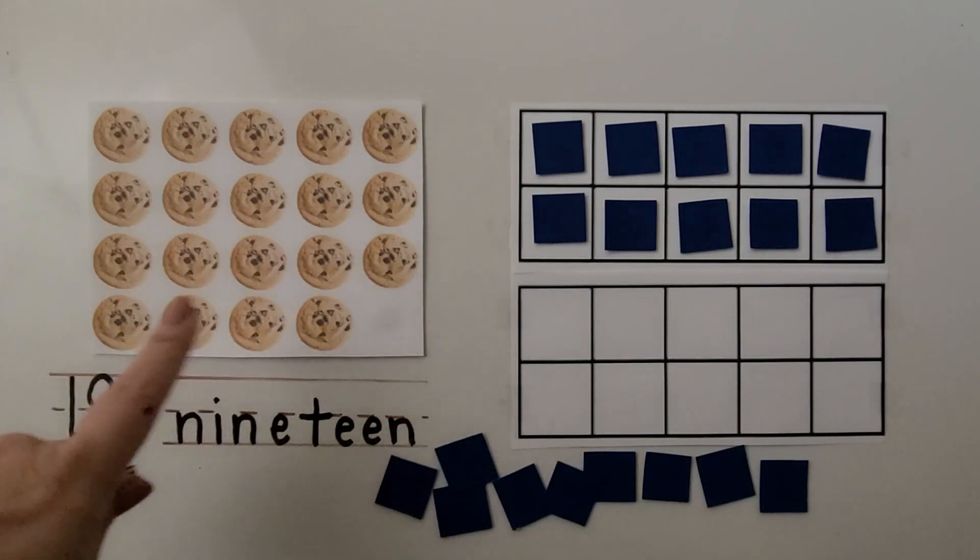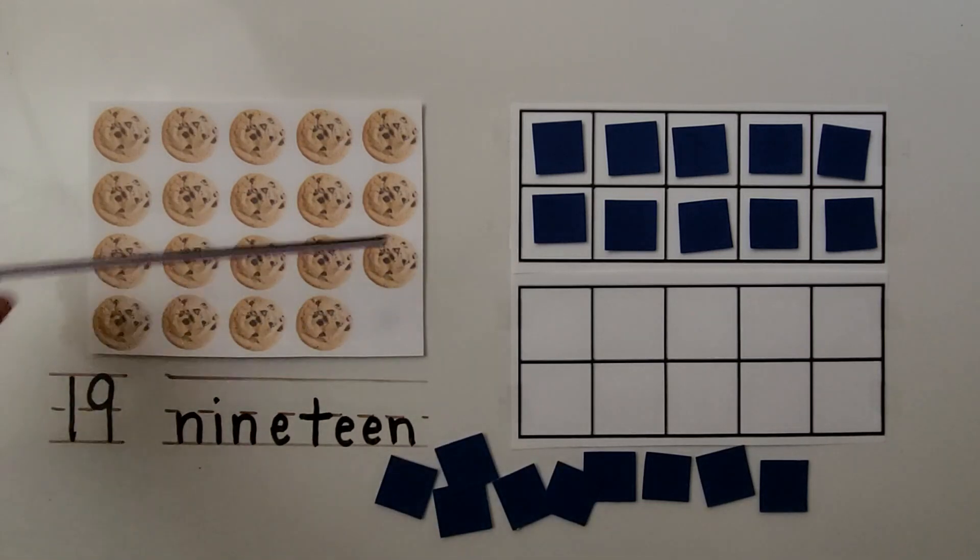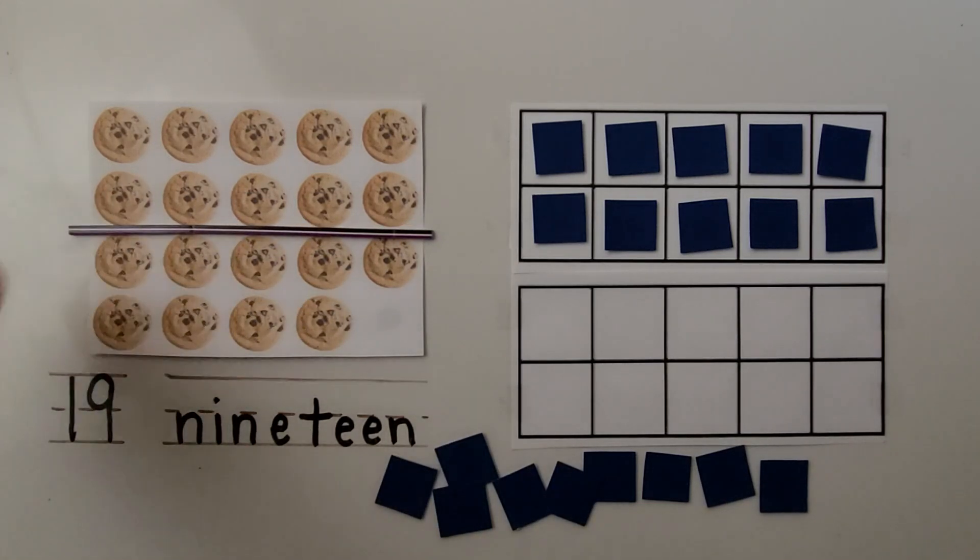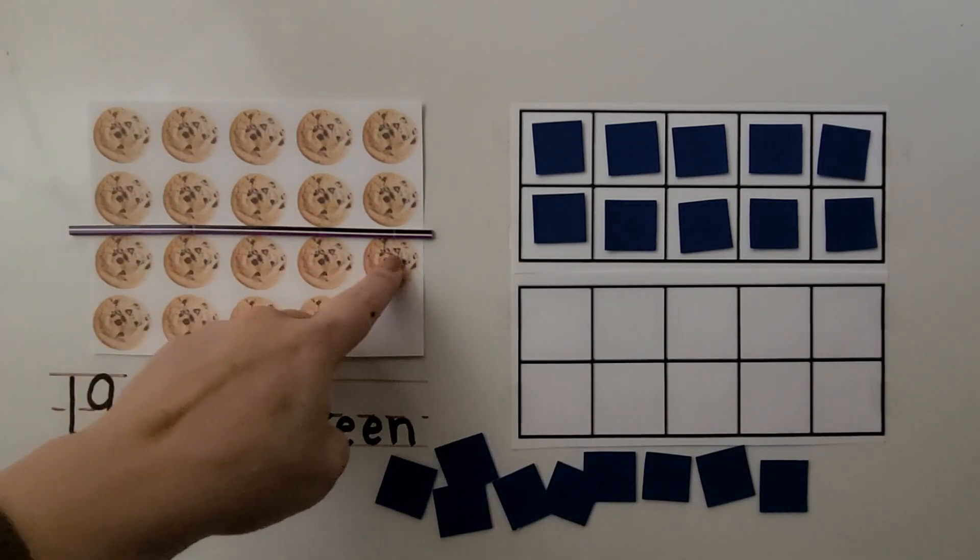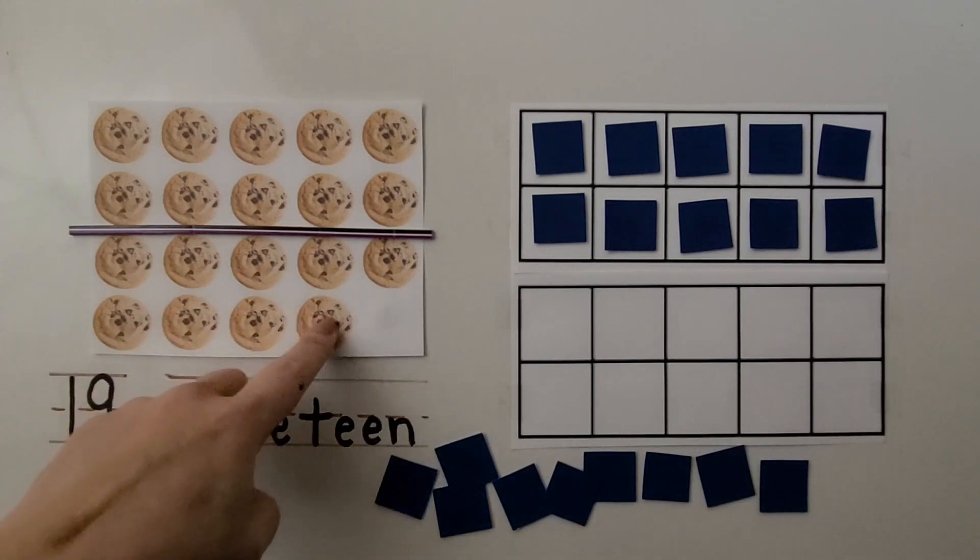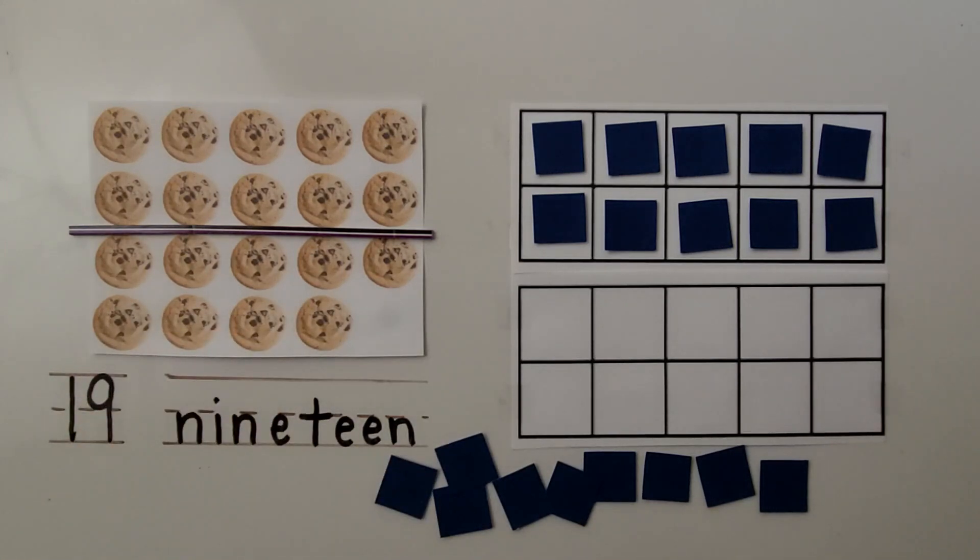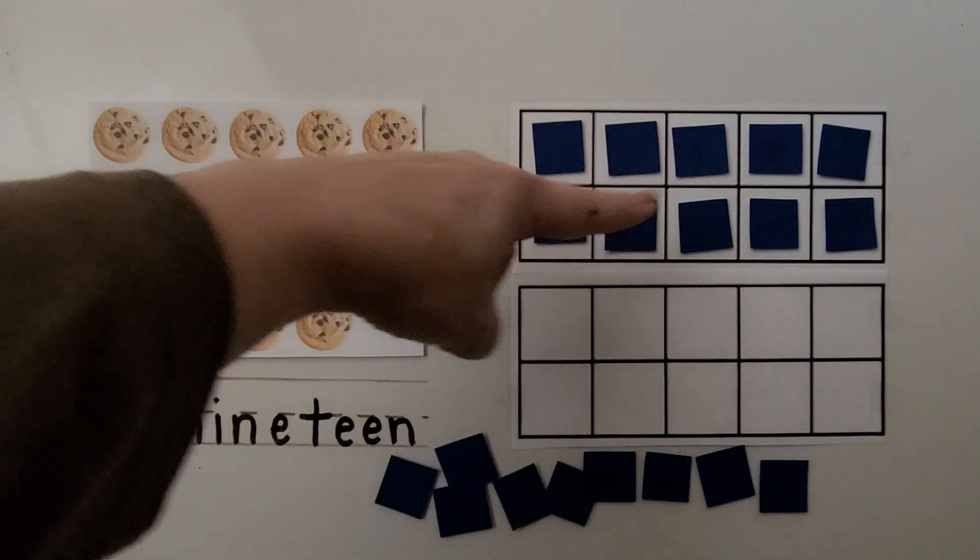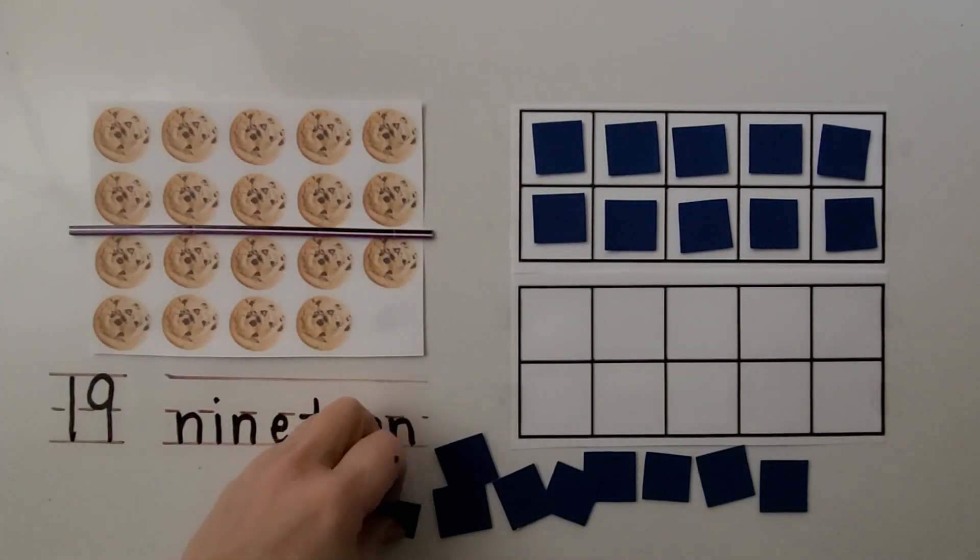Here we have some chocolate chip cookies. We can put a line here and we can see one set of 10 cookies and 1, 2, 3, 4, 5, 6, 7, 8, 9 more. There are 19 in all. And we can show one set of 10 and 9 more.